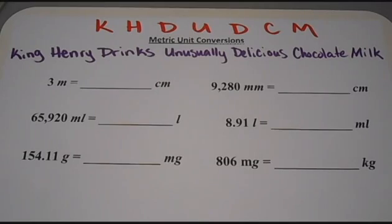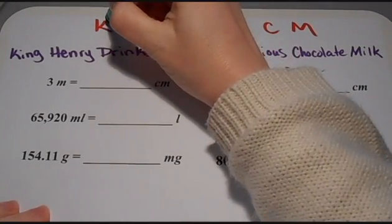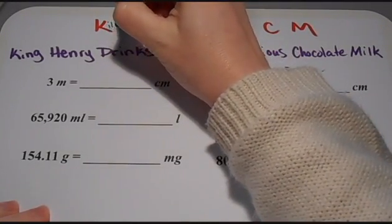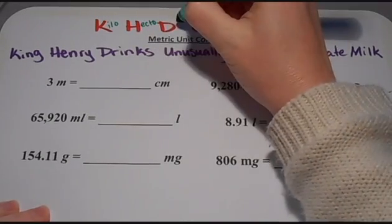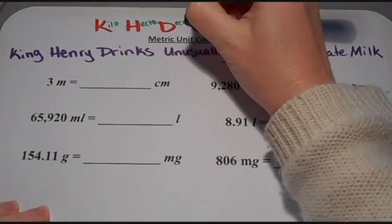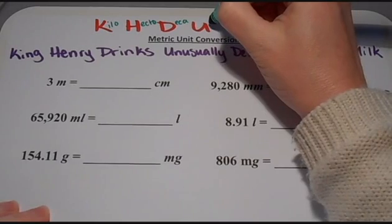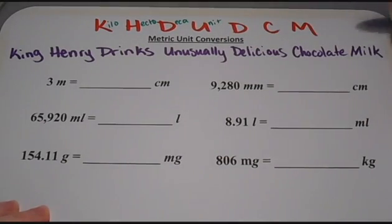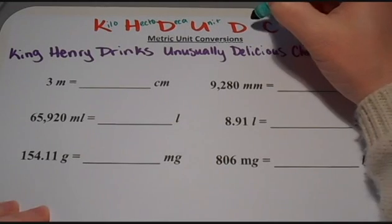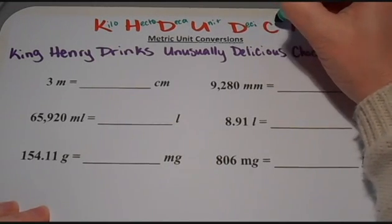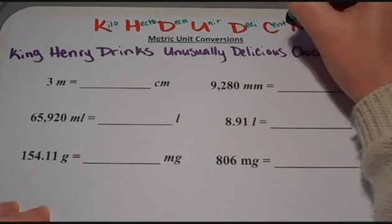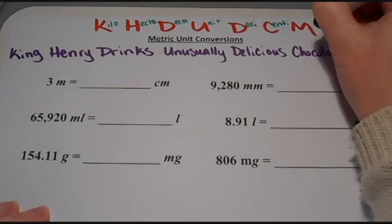Let me explain what these prefixes stand for. The K stands for Kilo, the H stands for Hecto, the D stands for Deca, the U is the unit — so this is your basic unit, your gram, your liter, or your meter. This D is for Deci, C is for Centi, and M is for Milli.